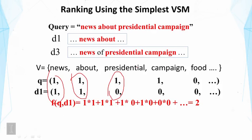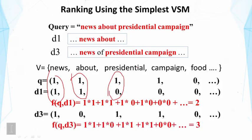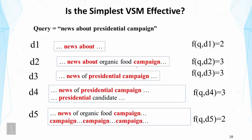For d3, the result is three because d3 matched three distinct query words: news, presidential, and campaign, whereas d1 only matched two. In this case it seems reasonable to rank d3 above d1, and this simplest vector space model does that — which looks pretty good. However, if we examine this model in detail we will likely find some problems. Here I show all the scores for the five documents, which you can verify by counting the unique query terms matched.